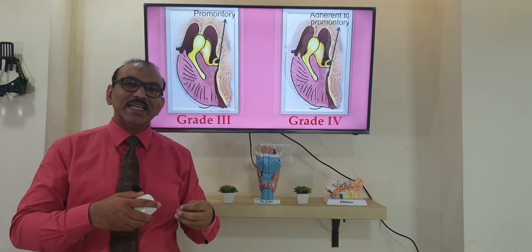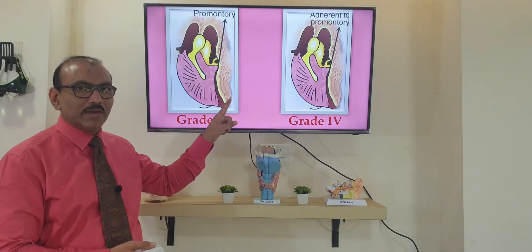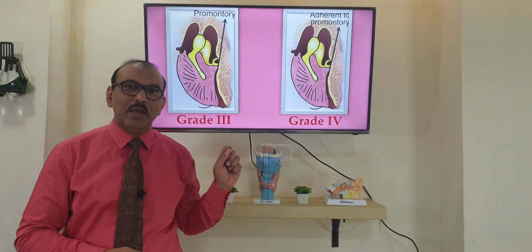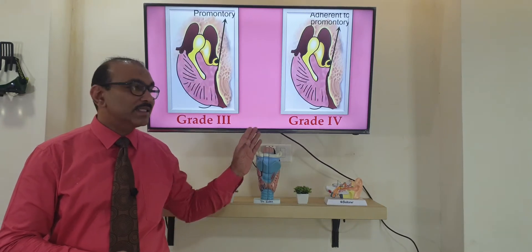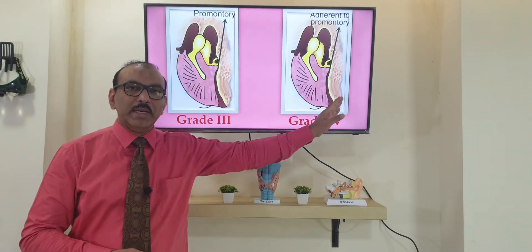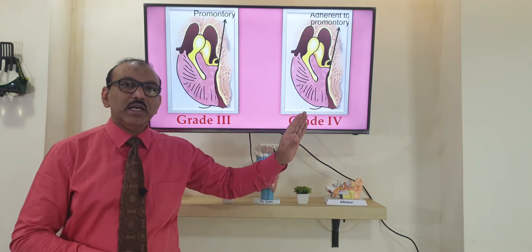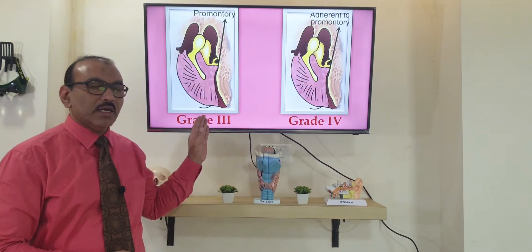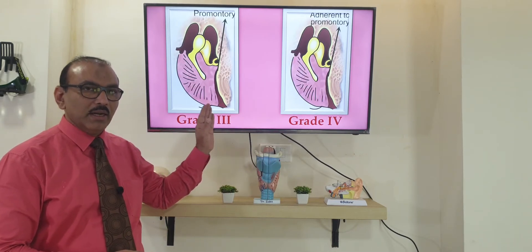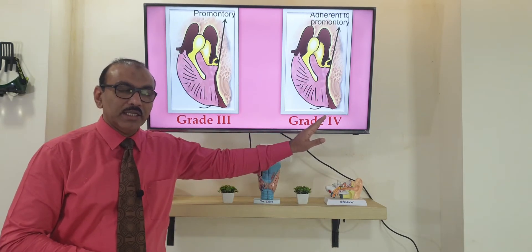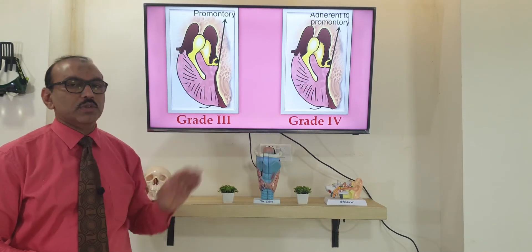When the negative pressure increases still further, the eardrum comes in contact with the medial wall of the middle ear, but it is still mobile — that is grade 3. If the eardrum is adherent to the medial wall of the middle ear, then it is grade 4. So in grade 3, the eardrum is in contact with the medial wall but still moves, while in grade 4 it is plastered and does not move at all.